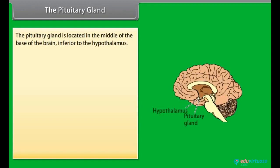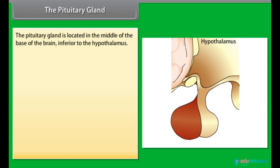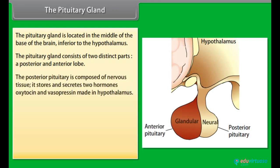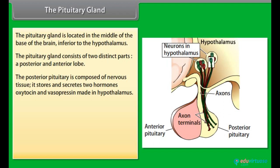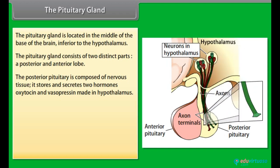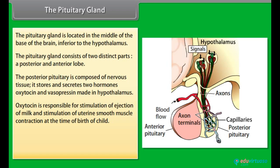The pituitary gland is located in the middle of the base of the brain, inferior to the hypothalamus. It consists of two distinct parts: a posterior and anterior lobe. The posterior pituitary is composed of nervous tissue and stores and secretes two hormones — oxytocin and vasopressin — made in the hypothalamus. Oxytocin is responsible for stimulation of milk ejection and uterine smooth muscle contraction at the time of childbirth.